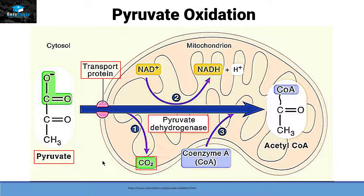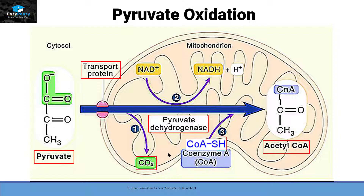Then with the help of pyruvate dehydrogenase, pyruvate will convert itself into acetyl-CoA. The enzyme pyruvate dehydrogenase means that it is going to remove hydrogen from a compound. But if we look at the molecule of pyruvate, it does have 3 atoms of hydrogen, and if we look at acetyl-CoA, we still have 3 atoms of hydrogen. So where does this enzyme remove hydrogen from? The answer is that it removes hydrogen from Coenzyme A. So the hydrogen released from Coenzyme A will attach itself to this carbon of pyruvate, converting it into acetyl-CoA.